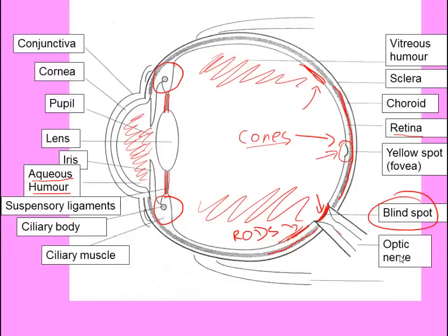The blind spot is there because that is the exit of the optic nerve. The retina conducts electrical impulses from all over the inside of the globe of the eye to the optic nerve. Where those neurons exit the eye, there are no light-sensitive cells, and therefore light falling on that area will simply not be detected.